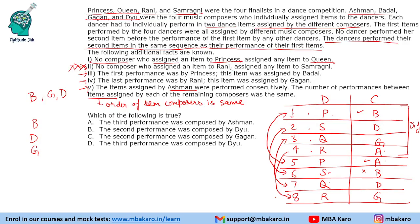The composer assigned to Rani did not assign any item to Samragni. Rani's composers are A and G, and Samragni's are D and B — so we can verify this is satisfied. Only four statements were needed; one of them was redundant. Now we have filled the order of dancers and composers completely, so let us answer the questions.